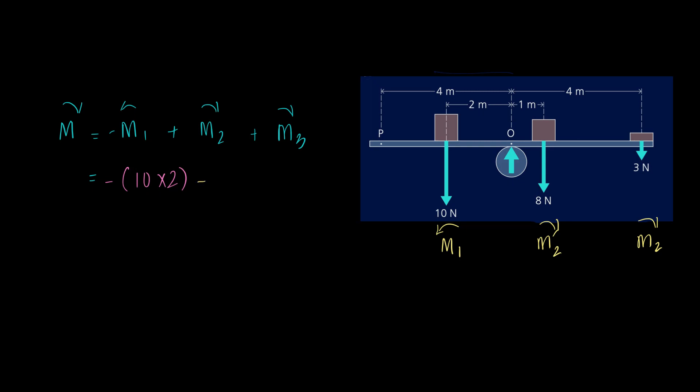Then we have M2 which is 8 Newtons but 1 away, so that's 8 times 1. Then we have M3 which is 3 Newton force but a distance of 4 meters away. Now we can calculate it: 10 times 2 is negative 20, plus 8, plus 12. This again is balanced or in equilibrium.